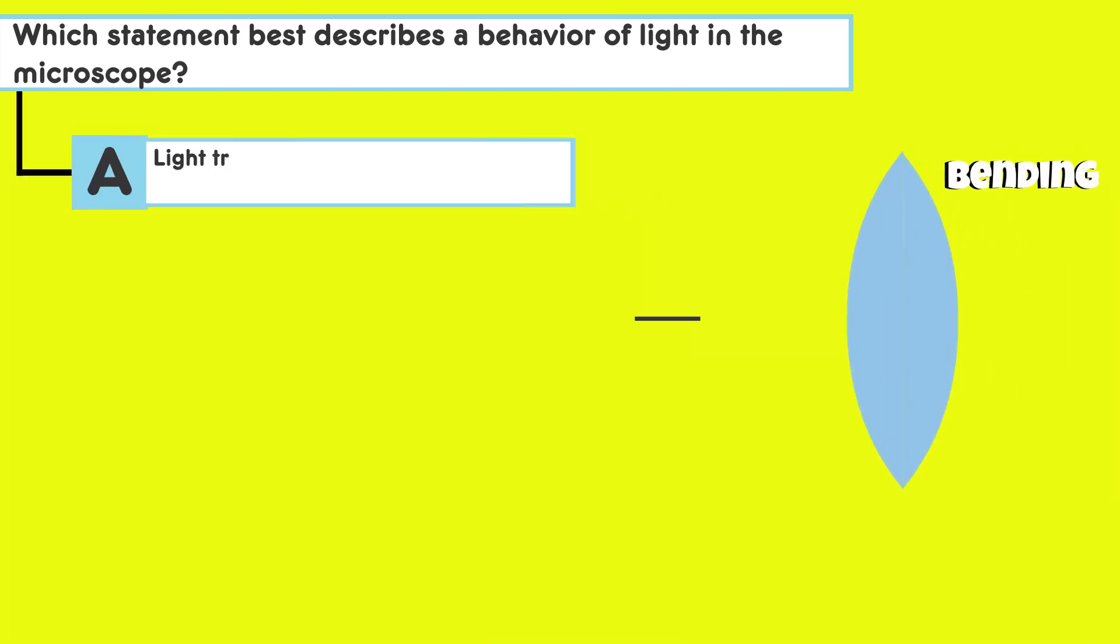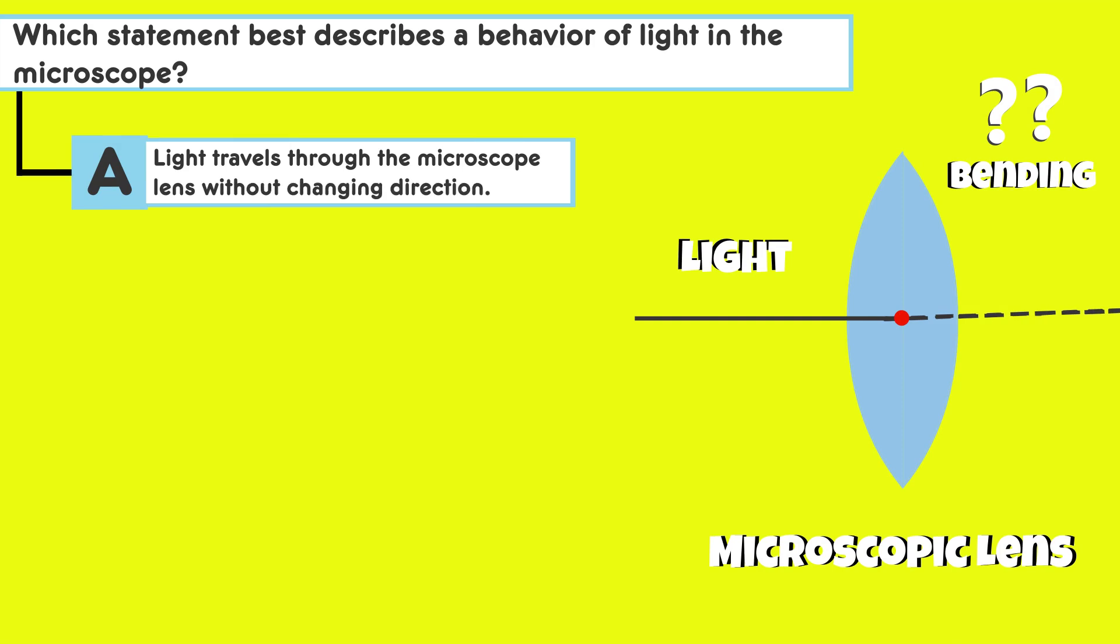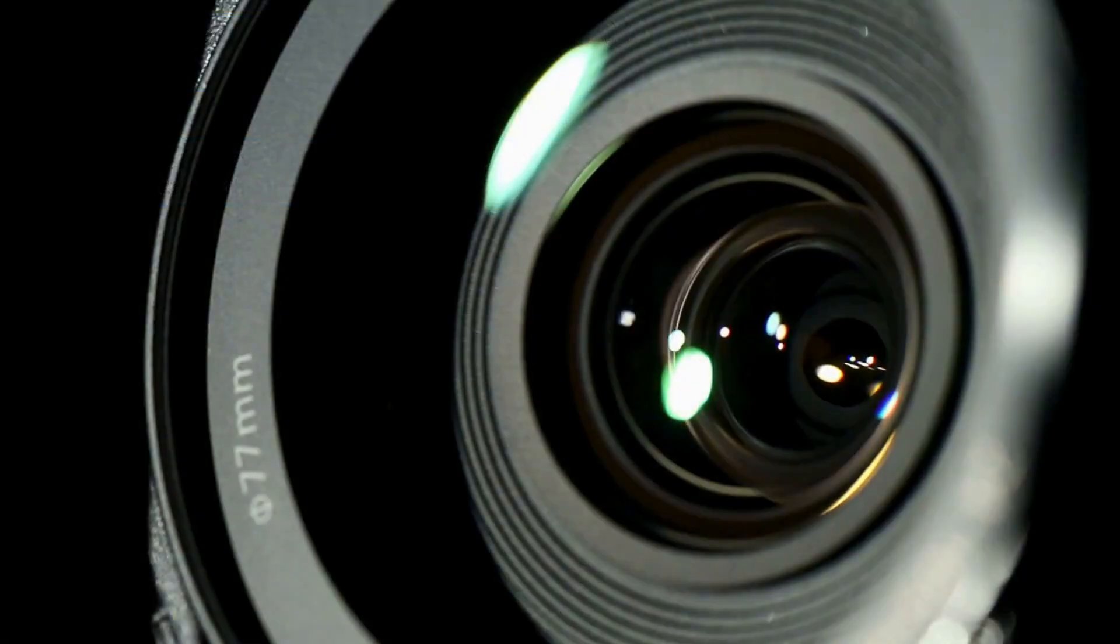Answer choice A: Light travels through the microscope lens without changing direction. Here's a quick tip. Consider the principle of refraction. Does light usually travel through lenses without bending?